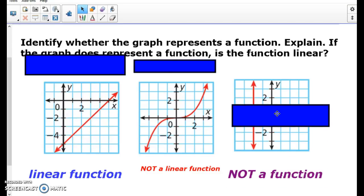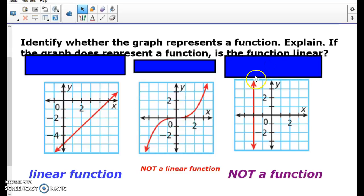This one is a straight line, but is not a function. Because remember, a function can only have one of the same x's, and this one, all the x's are going to be at negative 2. So this one still, yes, it's a straight line, but it's not a function. So it needs to be both in order to be a linear function.